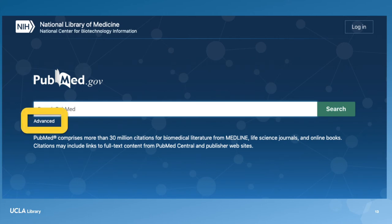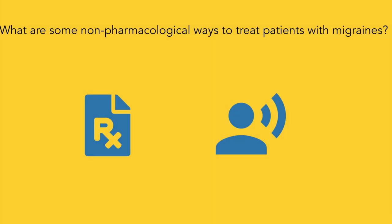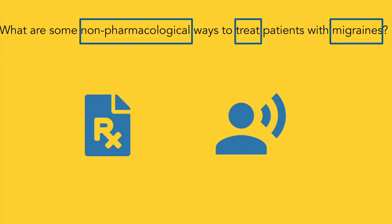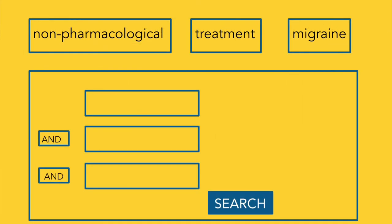Now it's time to search. First, identify some keywords based on your topic or your research question. Try to be as specific as possible. For example, if you wanted to know more about non-pharmacological treatments for migraines, you might identify the keywords non-pharmacological, treatment, and migraine to get started with your search.